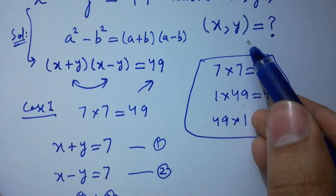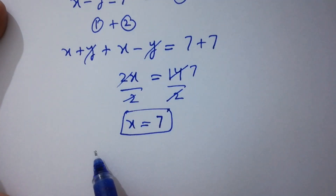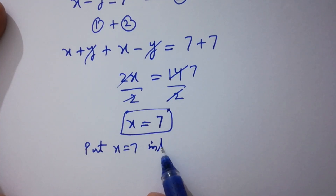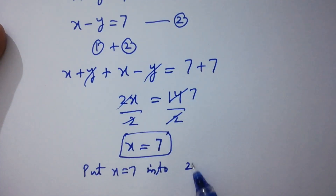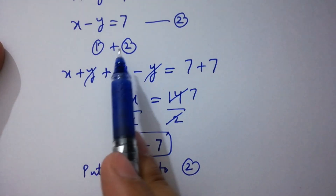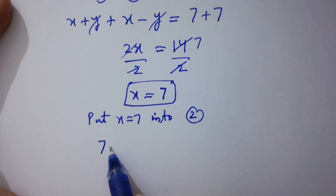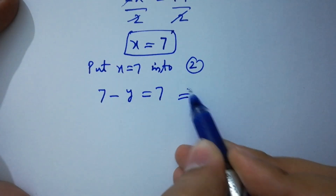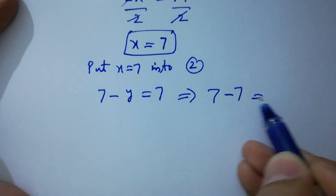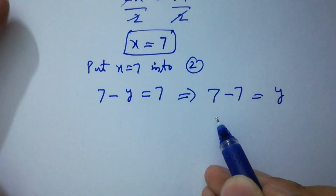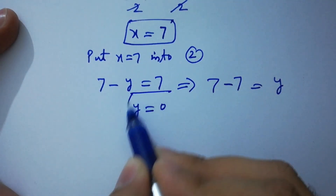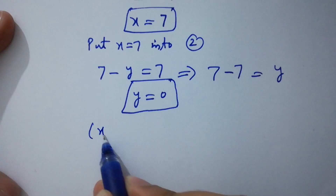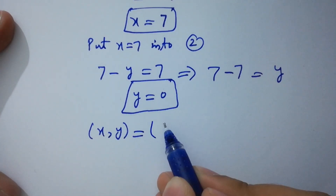Now we want the value of y. Substituting x equal to 7 into the second equation, we have 7 minus y equal to 7, which gives 7 minus 7 equal to y, so y equal to 0. Our first solution is x and y equal to 7 and 0.